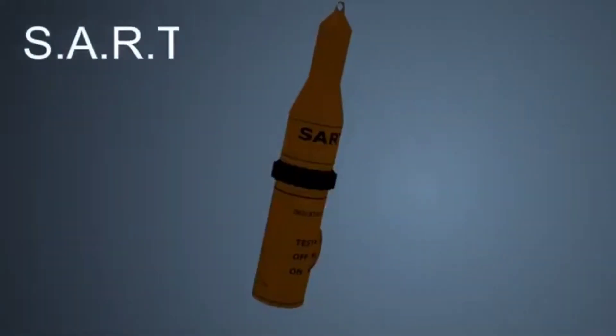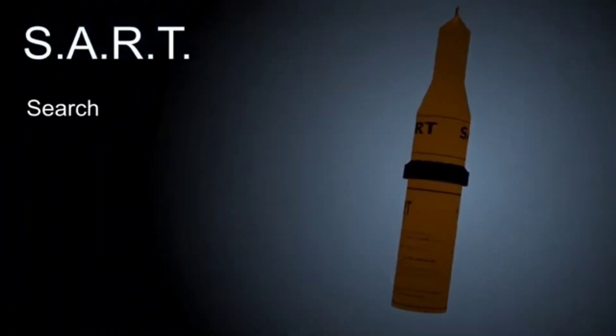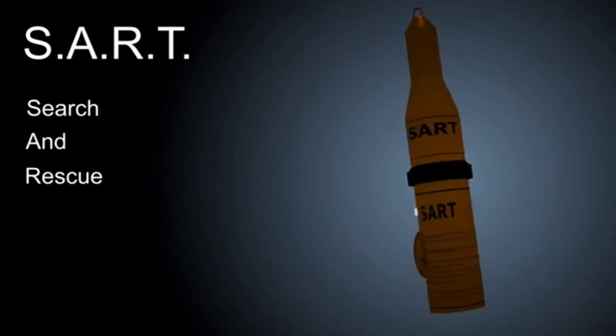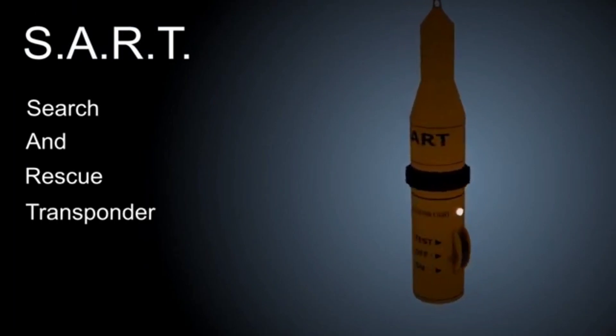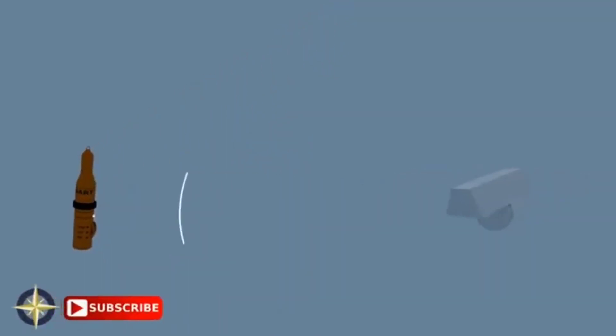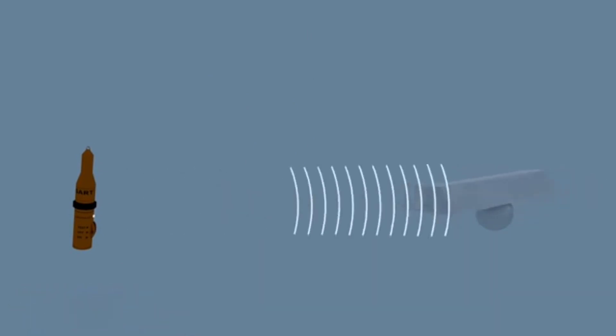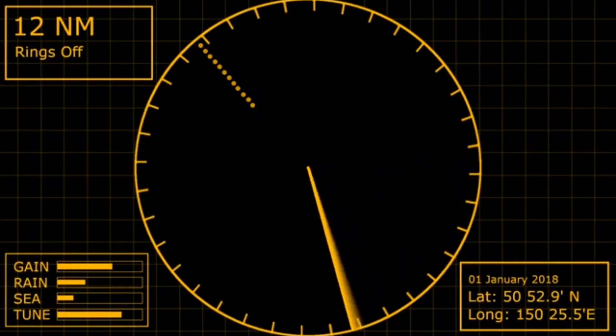SART stands for Search and Rescue Transponder. It's an active device, meaning it transmits a signal to draw attention to itself. It's triggered when it detects a pulse from a radar. As soon as it does, it transmits multiple pulses straight back, painting a series of 12 distinctive echoes on the screen, guiding the searching vessel towards its location.